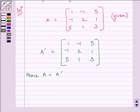Now since A is equal to A transpose, this implies A is a symmetric matrix, as we have already read in key idea.